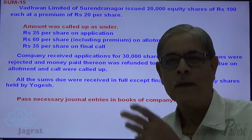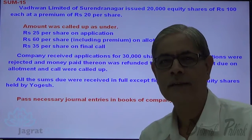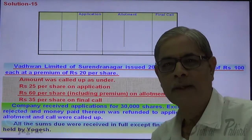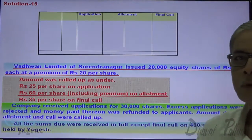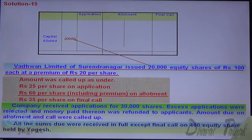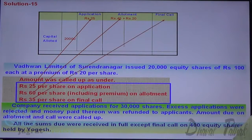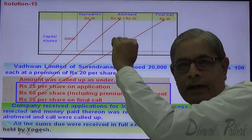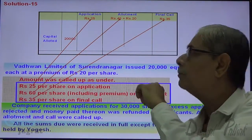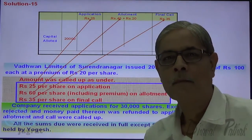First we shall prepare the working note and then write the journal entries. The number of shares issued or capital allotted is for 20,000 shares. With allotment, Rs. 20 is the premium. Application capital received is Rs. 25 per share; with allotment, 60 minus 20 equals Rs. 40 capital; and capital receivable with final call is Rs. 35. So: capital received with application Rs. 25, capital receivable with allotment Rs. 40, capital receivable with final call Rs. 35.